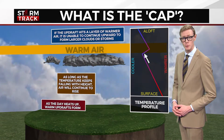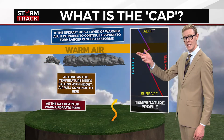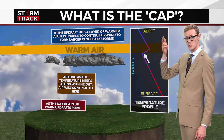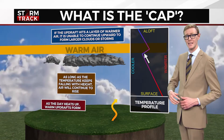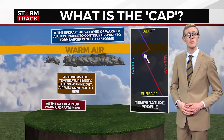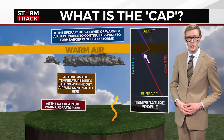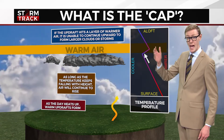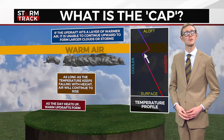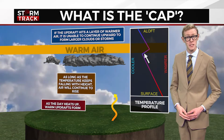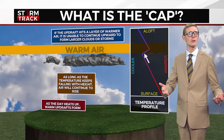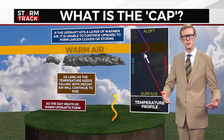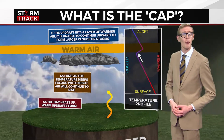If the updraft hits a layer of air where the temperature rises with height, it's unable to continue upward. This warm layer is the cap. If a cap stops upward motion, large cumulonimbus clouds and thunderstorms are not able to form.